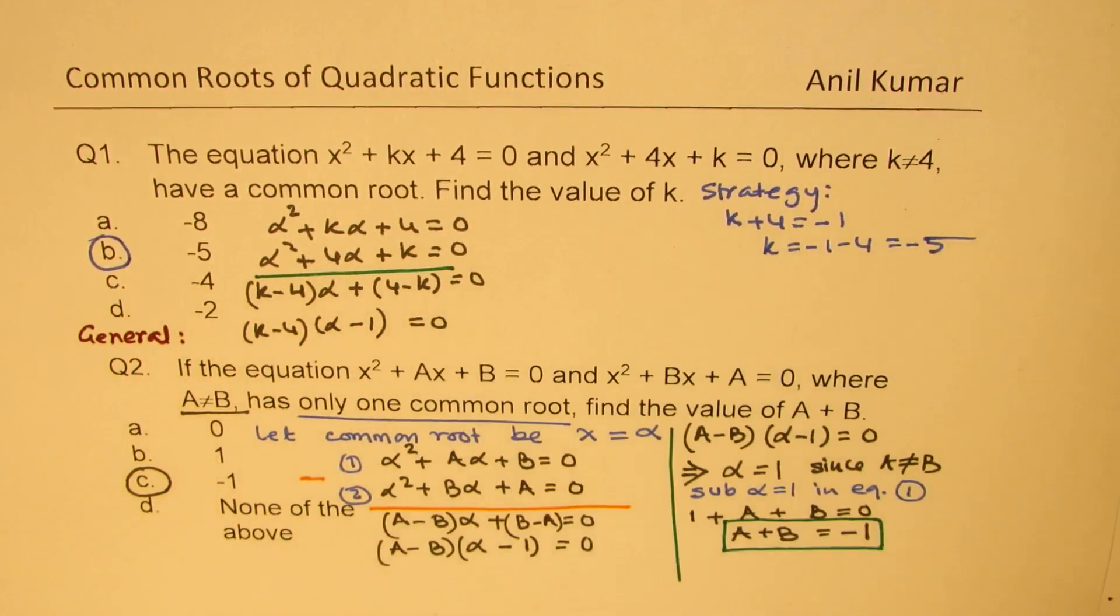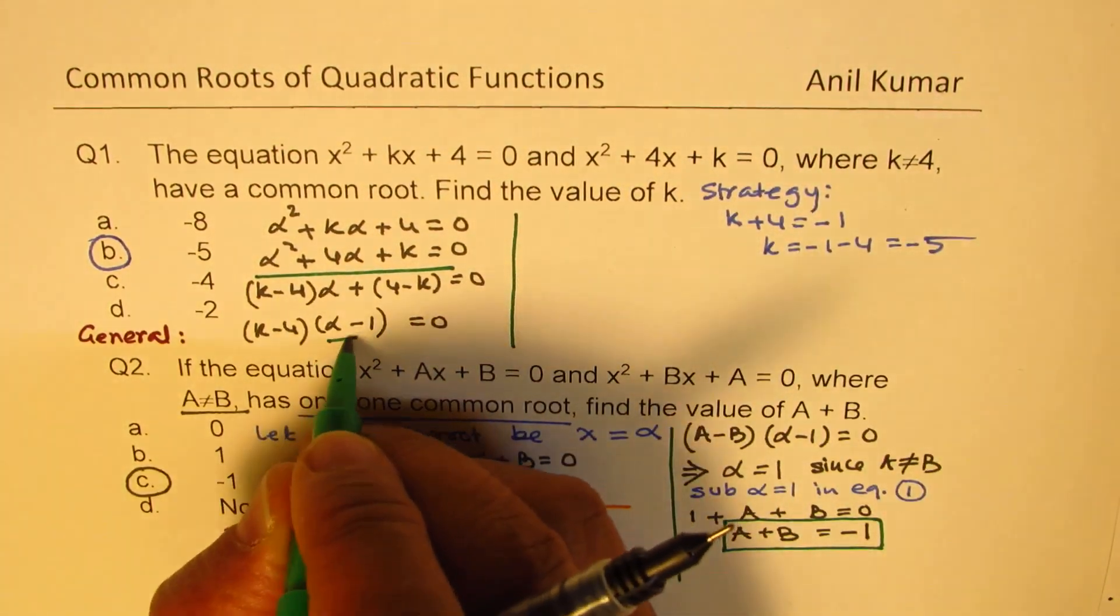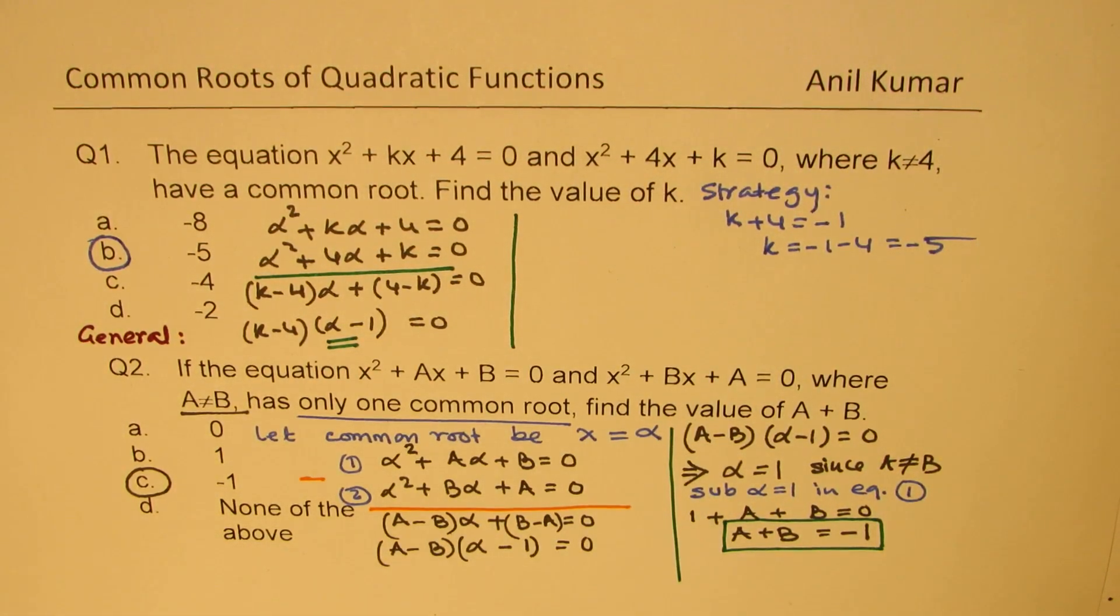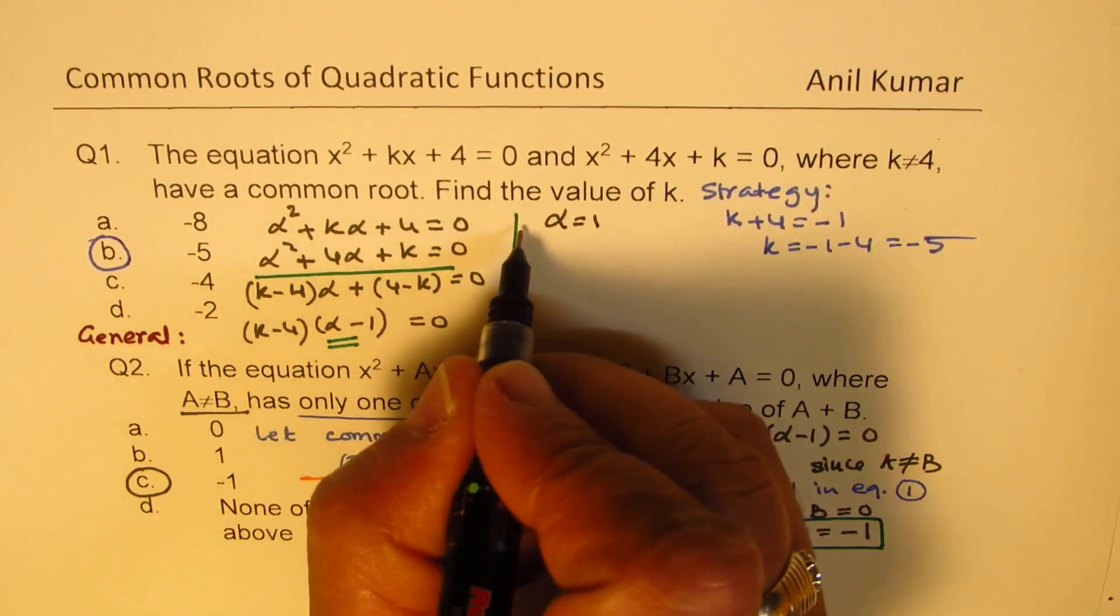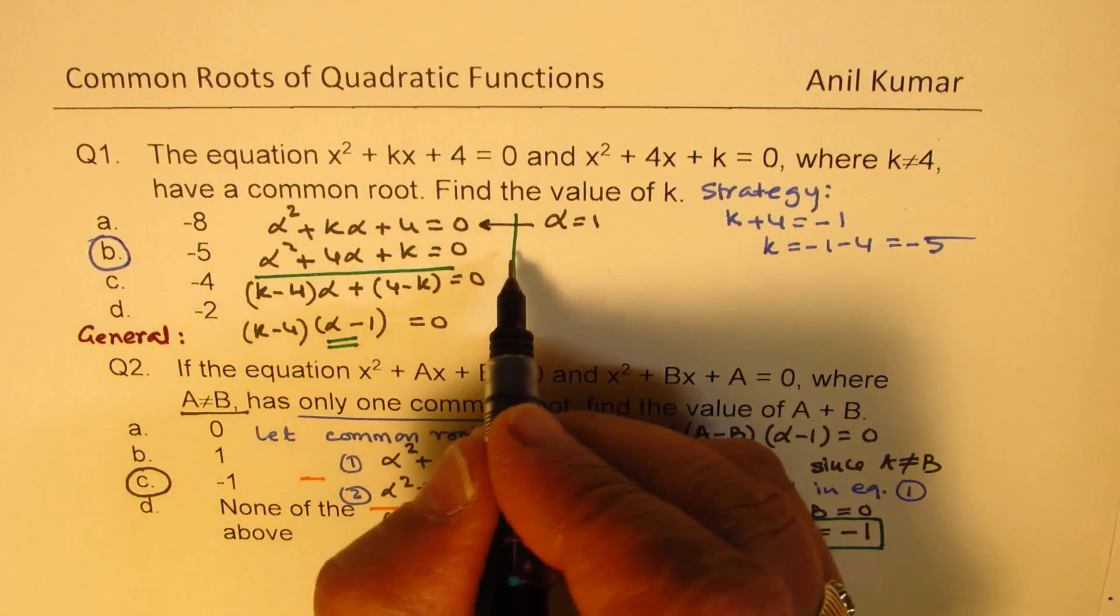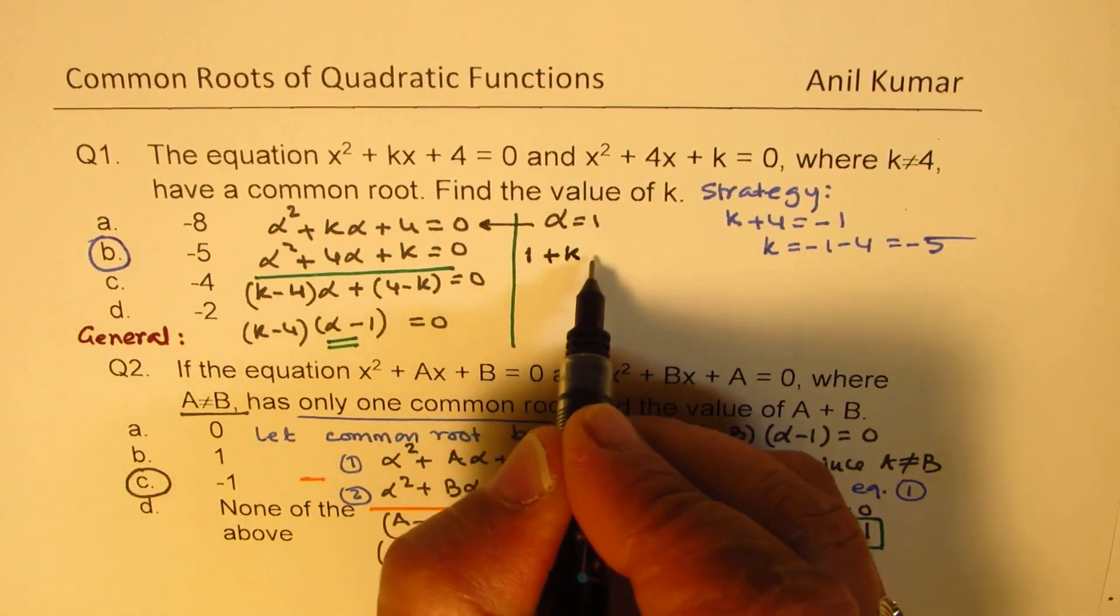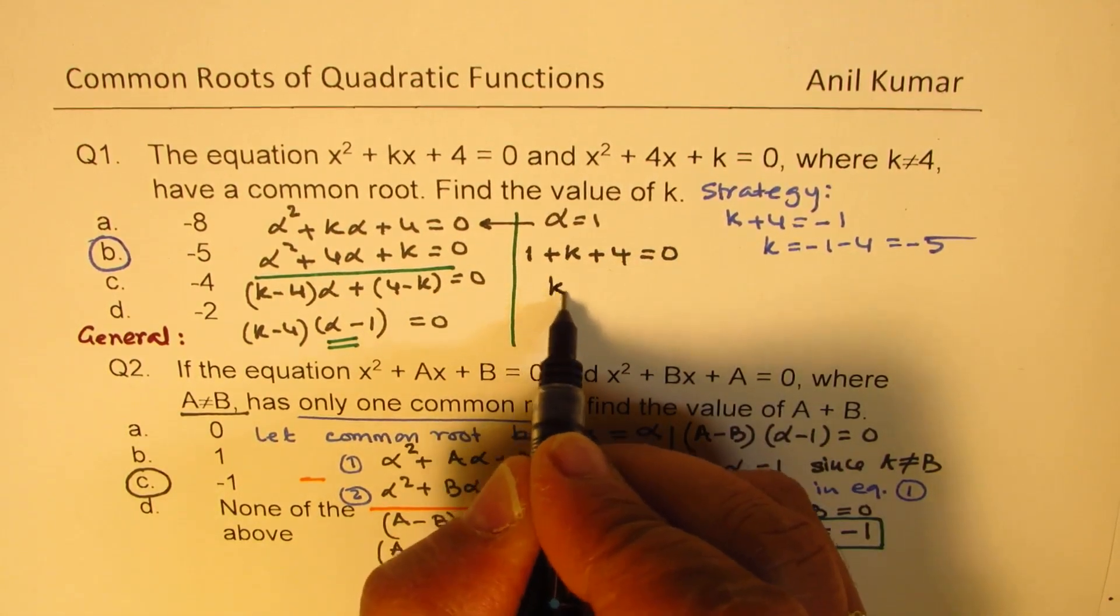And you get α - 1 = 0. So since α is equal to 1, right, since α is equal to 1, you can substitute this value here in this equation. And you get 1 + k + 4 = 0, right?